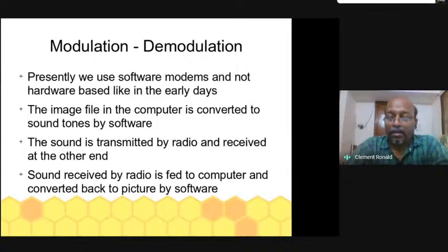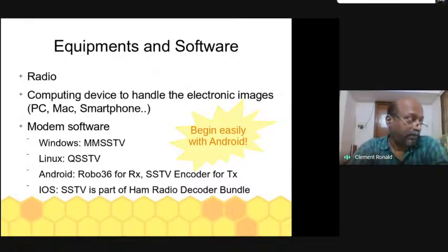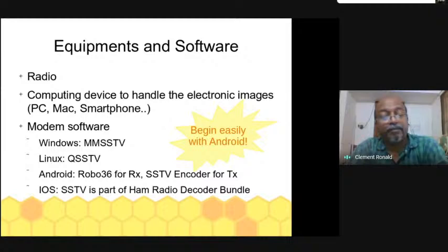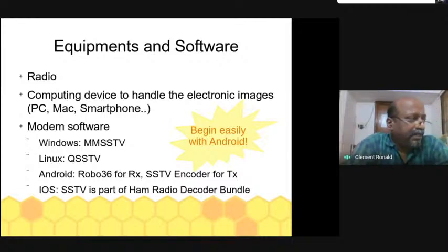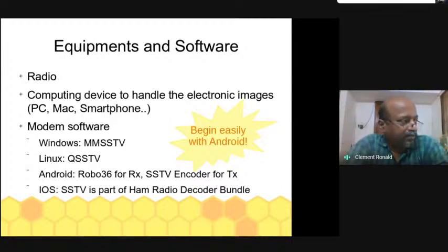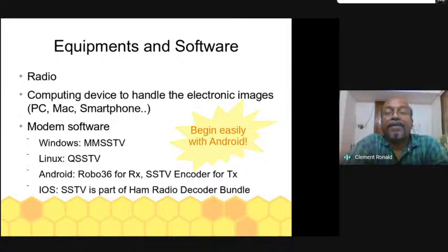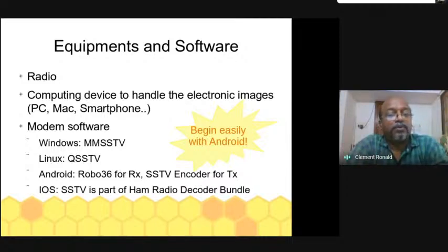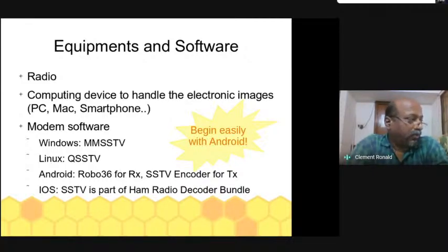Now we'll look at the equipment and software needed for working SSTV. Basically you need a radio and any computing device to handle the electronic images — a PC, Mac, smartphone, or whatever. You can begin easily with Android. To start, you can use your Android phone to receive and send SSTV, then move on to your computer, all without any interface equipment or wires connected to your rig.